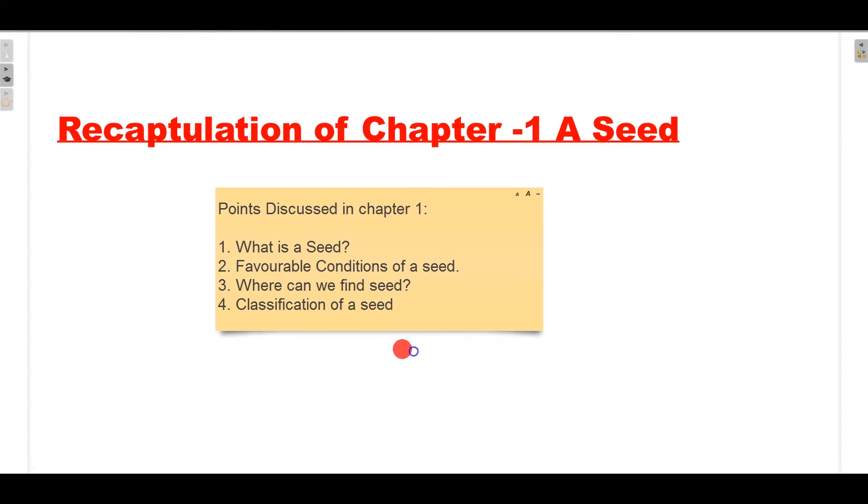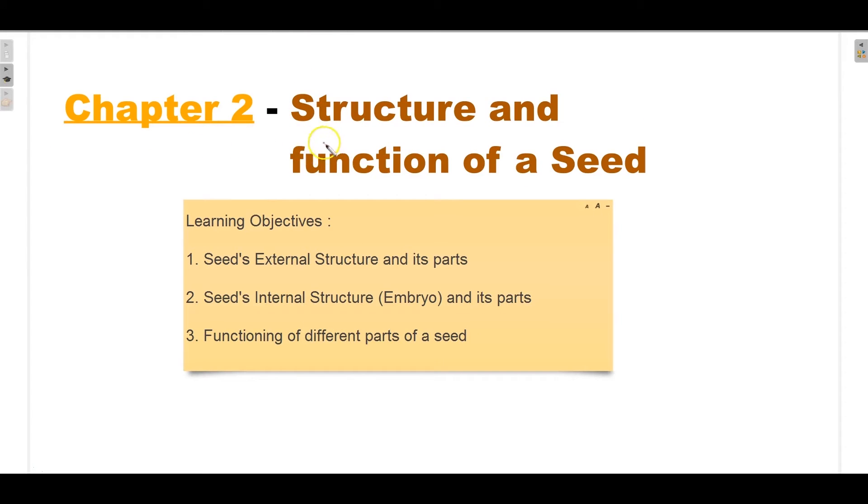Our second chapter under germination process is Structure and Functions of a Seed. In this chapter, I am going to discuss the seed's external structure and its parts, the seed's internal structure which is also called embryo and its parts, and third, functioning of different parts of a seed.